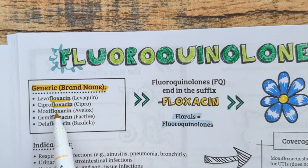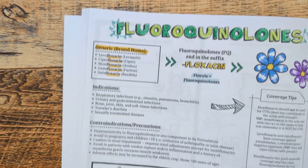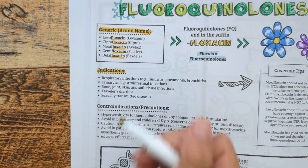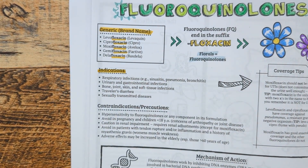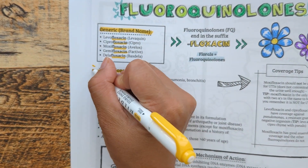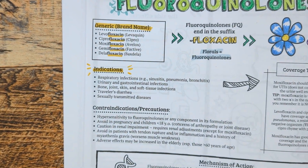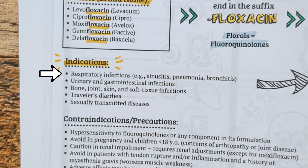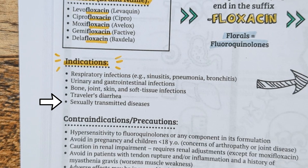This class of antibiotics is known to have a broad spectrum of activity, meaning they cover gram-positive, gram-negative, and atypical bacteria, making them useful for many different types of bacterial infections, including respiratory infections, UTIs, bone and joint and soft tissue infections, traveler's diarrhea, and sexually transmitted diseases.